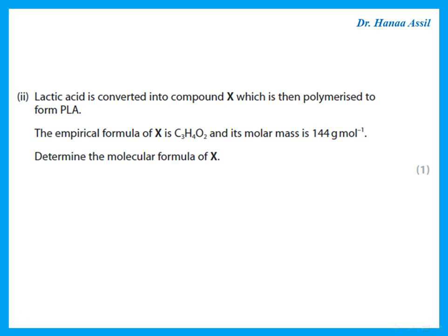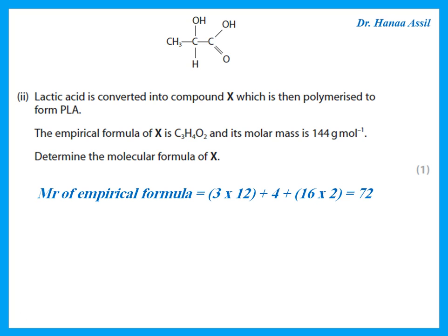Lactic acid is converted into compound X, which is then polymerised to form polylactic acid. X has an empirical formula of C₃H₄O₂ and a molar mass of 144. The Mr of the empirical formula is 72, so 144/72 = 2, meaning the molecular formula is twice the empirical formula: C₆H₈O₄.